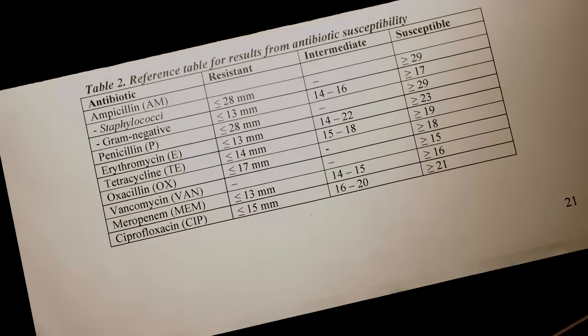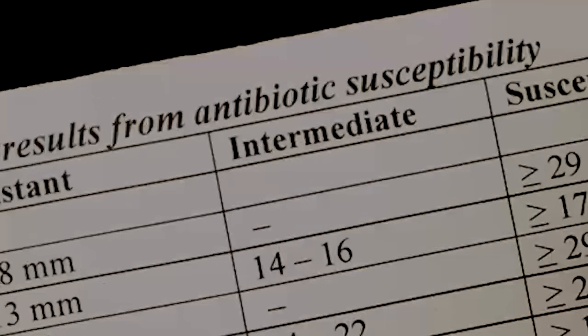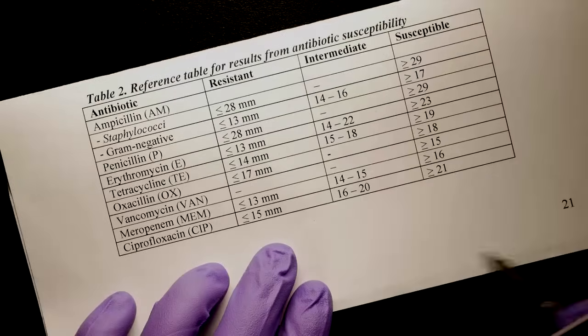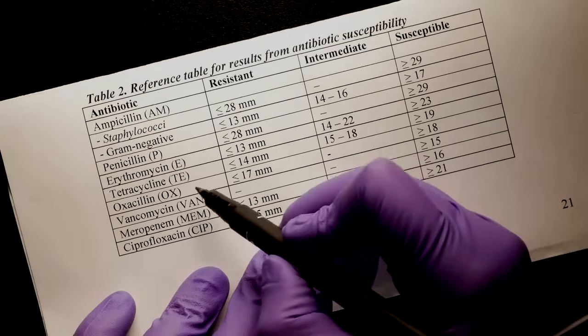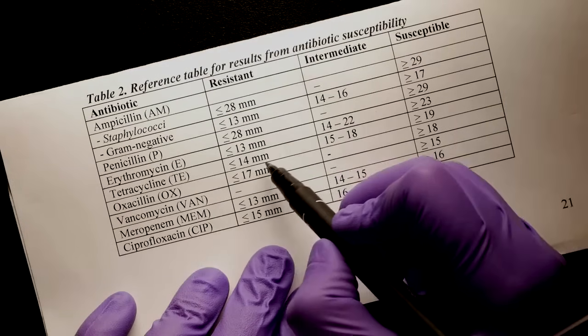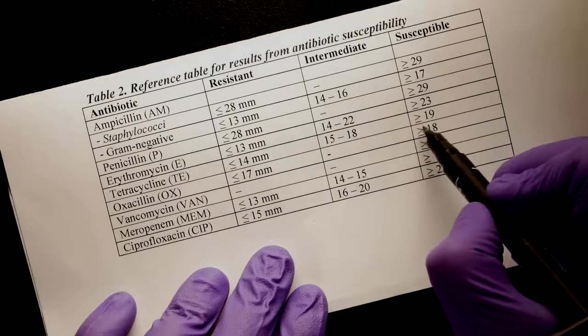Use the reference table to determine whether the bacteria are susceptible, resistant, or if they have an intermediate phenotype. The reference table provided by your teacher takes into consideration these factors, as well as how each antibiotic is metabolized by the human body. Always pay attention to unexpected results. After all, penicillin was a surprise discovery.